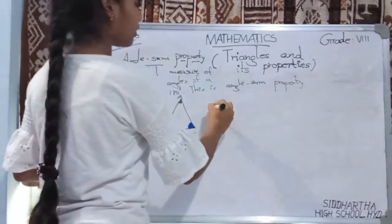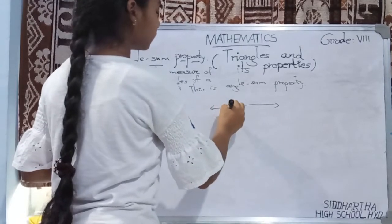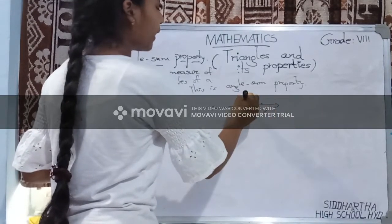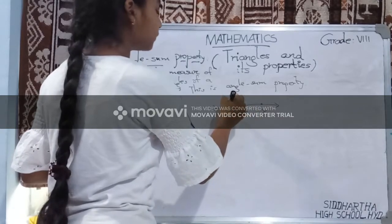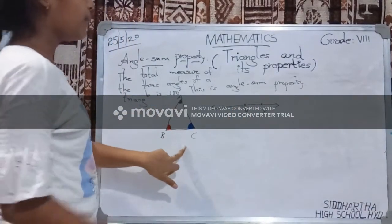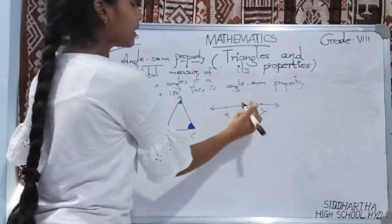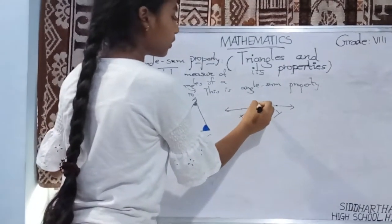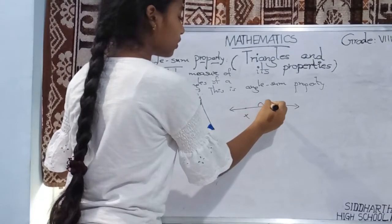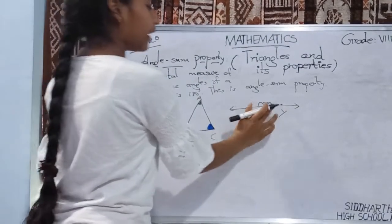And the last angle is marked in red. Next, draw a line segment XY and mark a point O on it. Cut these angles and paste them on this line segment adjacent to each other to form an angle at O.